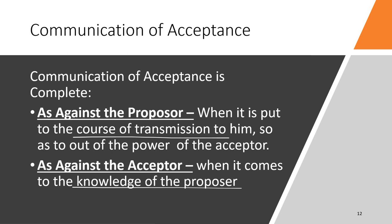As against the acceptor, the communication of acceptance is complete when it comes to the knowledge of the proposer — when the proposer gets to know about the acceptance. Until I know about your acceptance, you are not bound. I get bound the moment you accept, but you are only bound once I get to know about your acceptance. So for the proposer, it is completed the moment it is out of the acceptor's hands; for the acceptor, it completes only when the proposer gets to know.